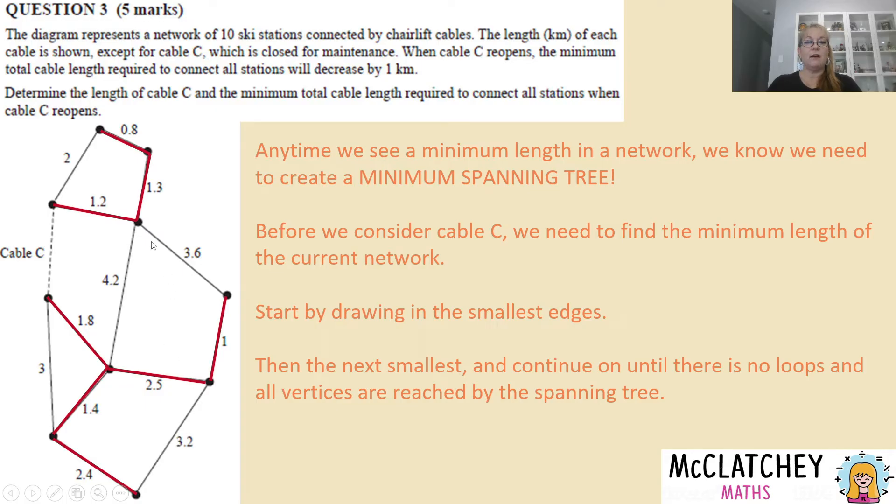And the next biggest is 3.2 but once again that's going to create a loop so no there. And then I've got a choice now of 3.6 and 4.2 and 3. 3 is the smallest here once again creates a loop so no, 3.6 is the last one. And let me just check have I got every vertex represented? Yes I do. I've got my minimum spanning tree and cable C is not included. So therefore I've got my first out of five marks.